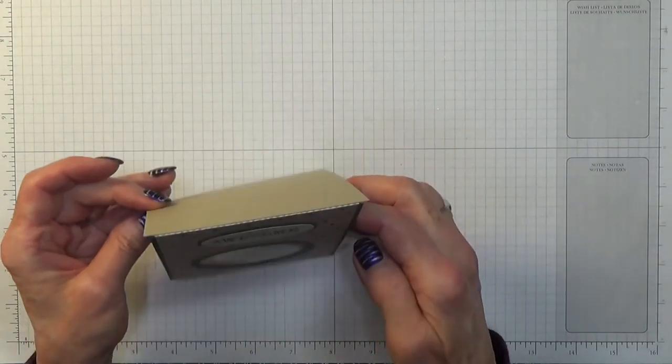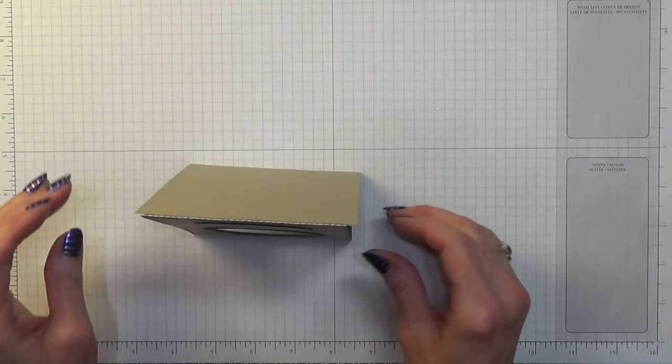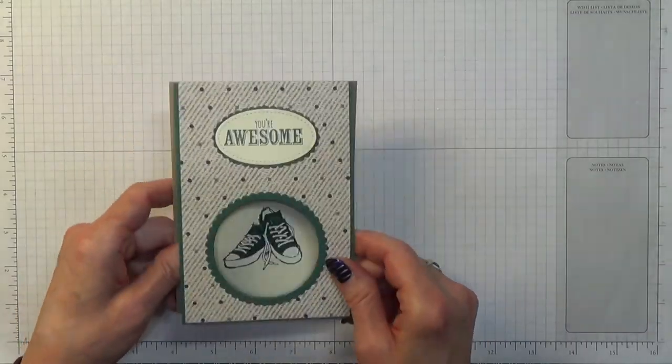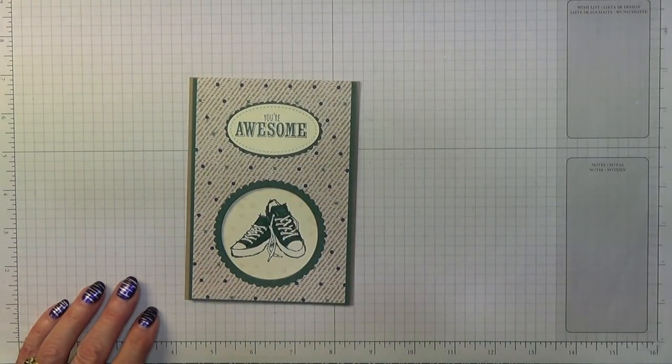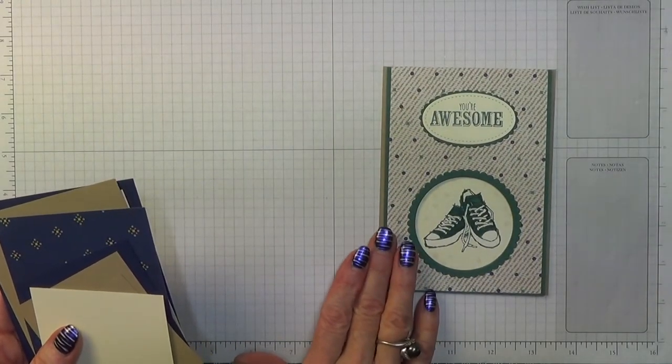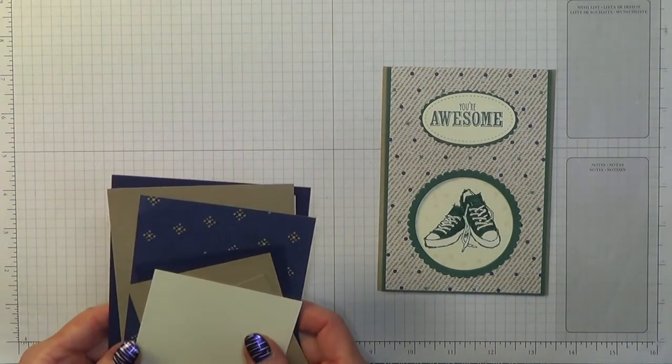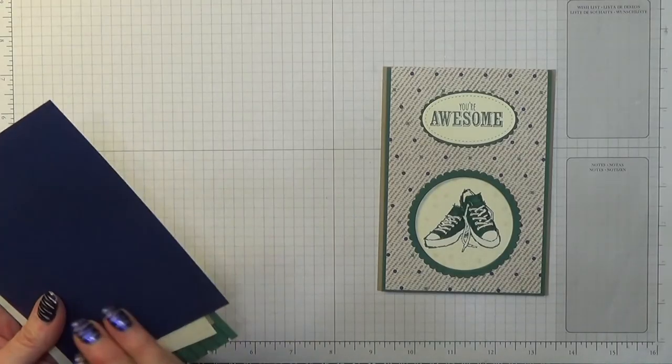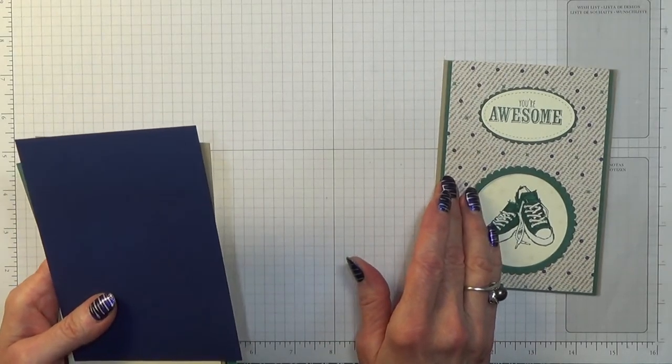It stands up like all cards. I'm going to change my color scheme. Instead of Tranquil Tide, I'm going to be using Night of Navy. So I'm going to tell you the card pieces that you'll need.